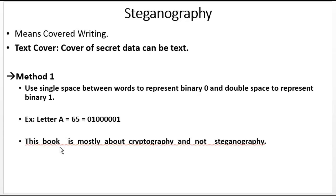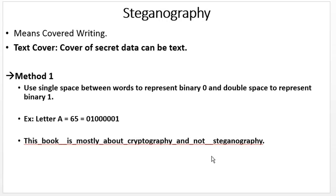After 'book' we have two spaces, which represents 1. After 'is' there is a single space, which represents 0. Similarly, we can further notice that all 0s are represented by a single space and 1s are represented by double spaces.